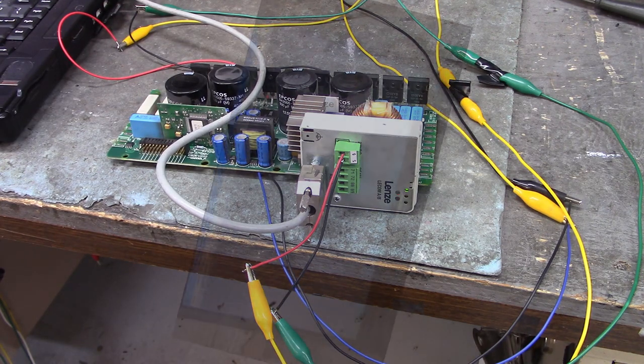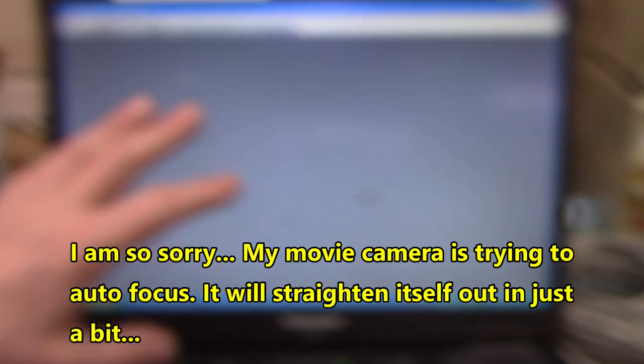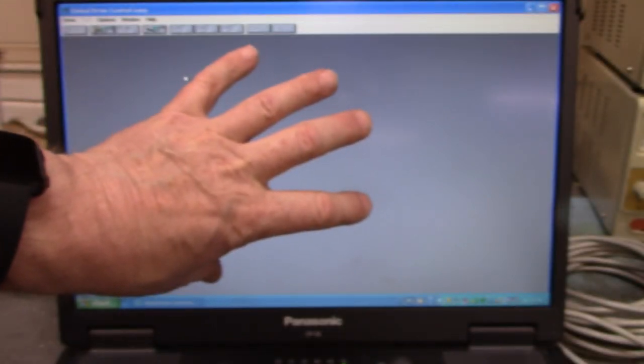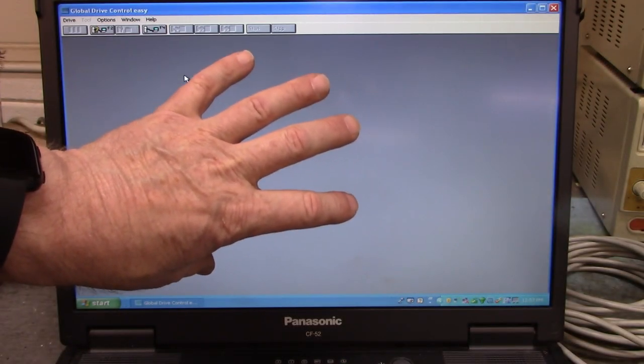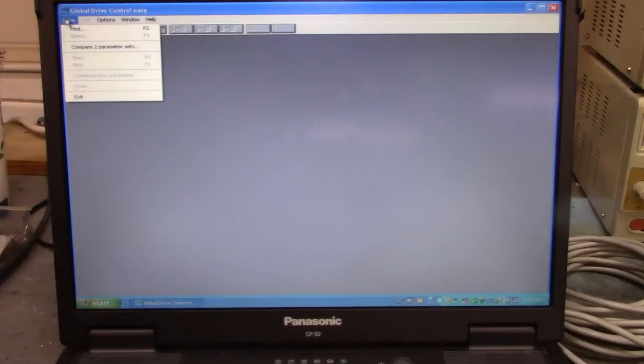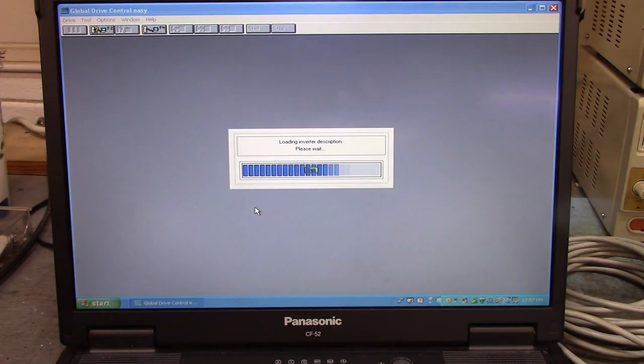This is Global Drive Control Easy, and after you power this up, sometimes there's an option menu that pops up that allows you to select the drive, but always cancel out of that. And this will sometimes be checked, uncheck that. Go over to drive, click on find, click search, click search, and we found it. There we are.